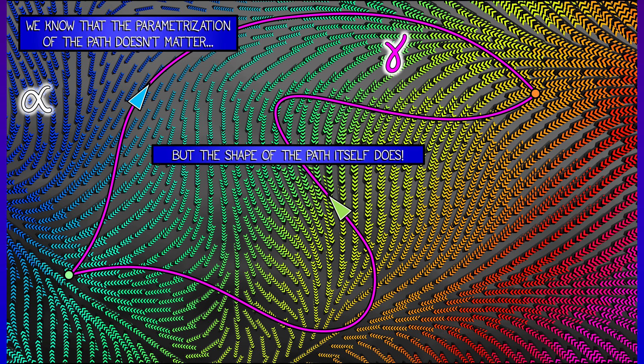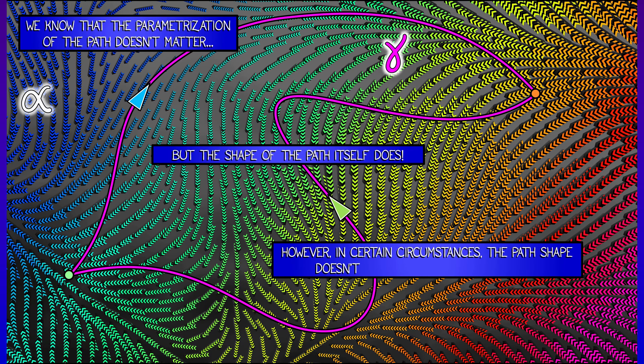However, the shape of the path really does matter. If you change the path, then you're sampling that one-form field at different places. However, in certain circumstances, the shape of the path doesn't matter either. It's only the endpoints that matter.